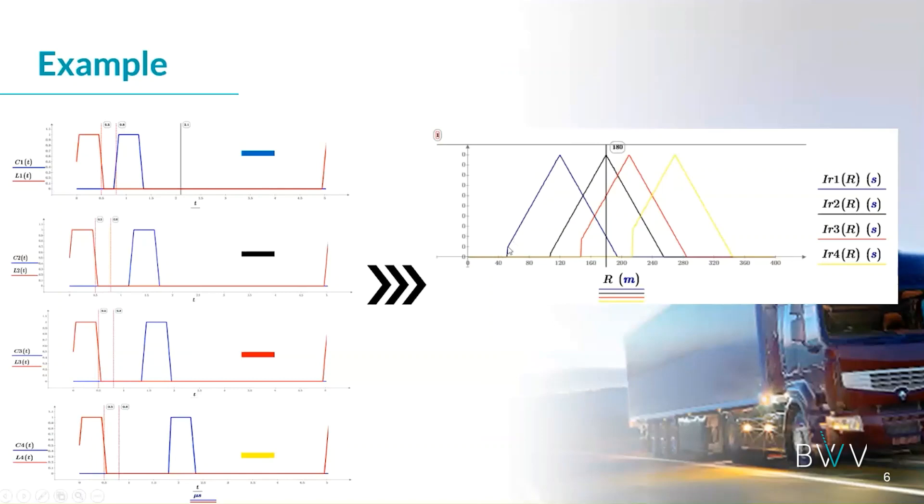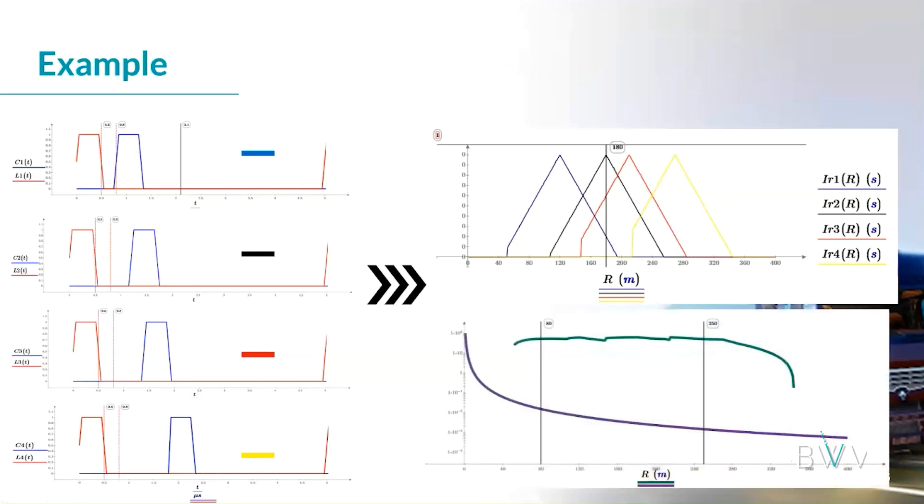By altering the width of the pulses, we can also determine the width, the depth of field that we want to measure in the scene. Just an example to show you, we generated here four different pulses. The red represents the opening of the laser. The blue represents the opening of the camera.